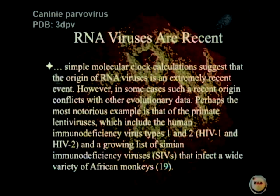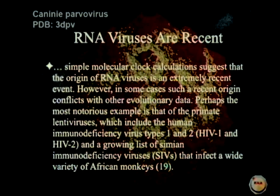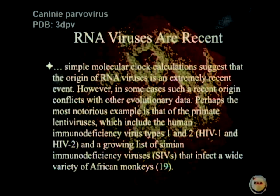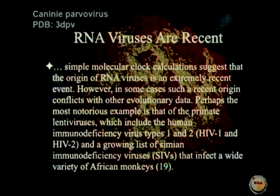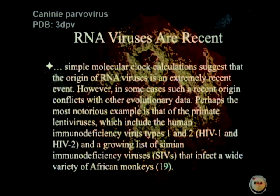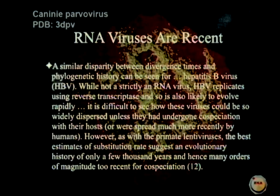That's a major difference between the two. Simple molecular clock calculations suggest that the origin of RNA viruses is an extremely recent event. However, in some cases such a recent origin conflicts with other evolutionary data. Perhaps the most notorious example is that of the primate lentiviruses, which includes human immunodeficiency viruses type 1 and 2 — that's HIV — and a growing list of simian immunodeficiency viruses that afflict monkeys and apes, infecting a wide variety of African monkeys.